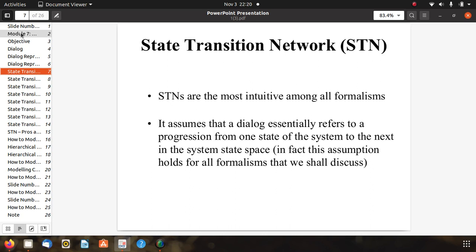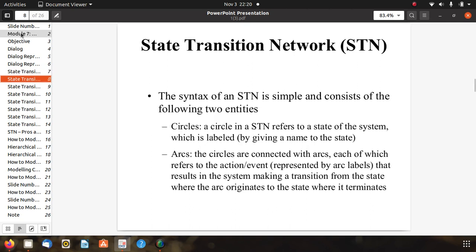The syntax of an STN is simple and consists of two entities. First is circle: a circle in STN refers to the state of the system which is labeled by giving a name to the state. Second is arc: the circles are connected with arcs, each of which refers to the actions or events represented by arc labels that result in the system making a transition from the state where the arc originates to the state where it terminates.